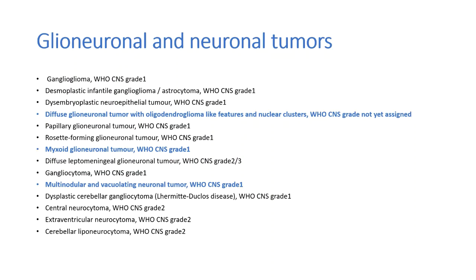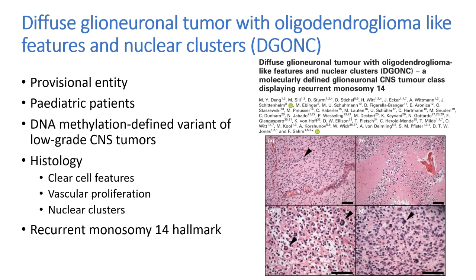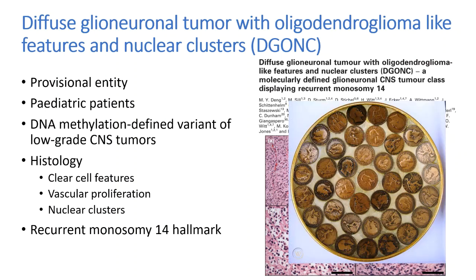Switching to glioneuronal and neuronal tumors, three new types have been added. First, diffuse glioneuronal tumor with oligodendroglioma-like features and nuclear clusters, shortly called DGONC. This is a provisional entity based on DNA methylation profile, seen in pediatric patients. Histologically, they resemble oligodendrogliomas with clear cell features, vascular proliferations and nuclear clusters resembling pennies arranged on a plate. They are characterized by recurrent monosomy 14.